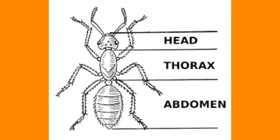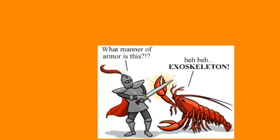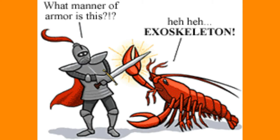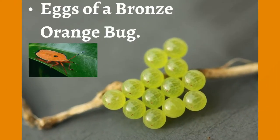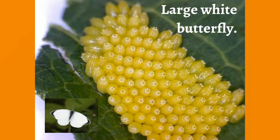The exoskeleton is a skeleton on the outside of the body — a stiff covering on the outside of some creatures that helps with protection. In this picture there's a man trying to fight a lobster, but the lobster is going to win because it has a hard exoskeleton. Insects can also lay eggs.